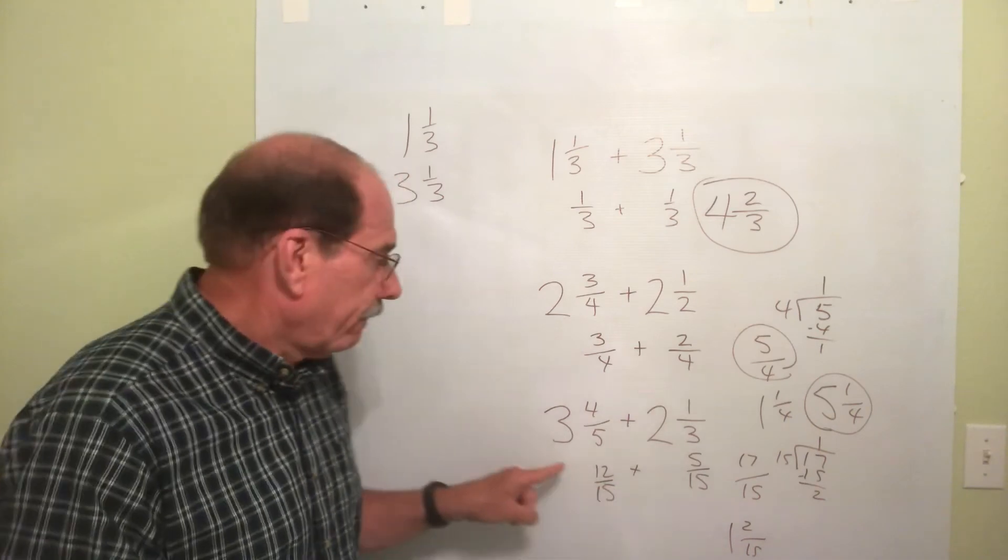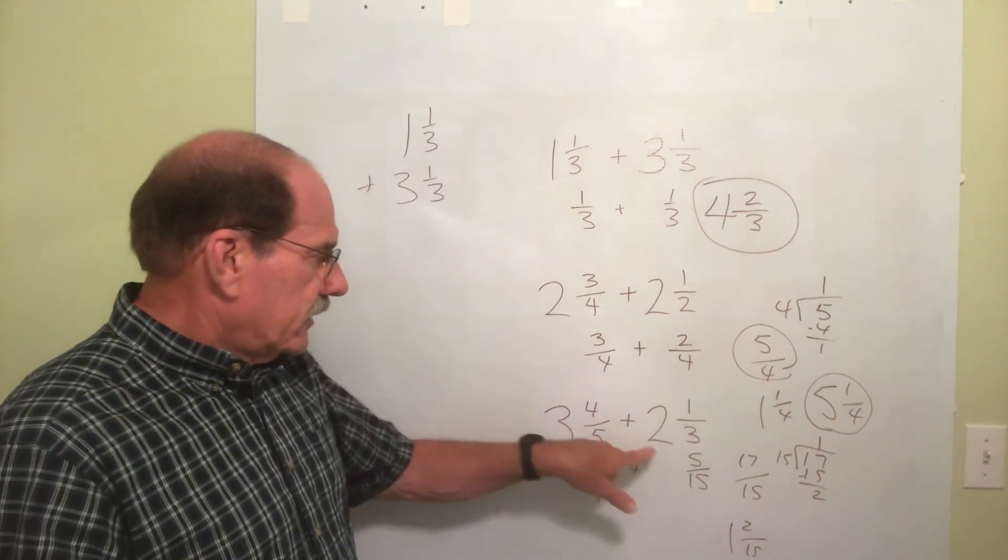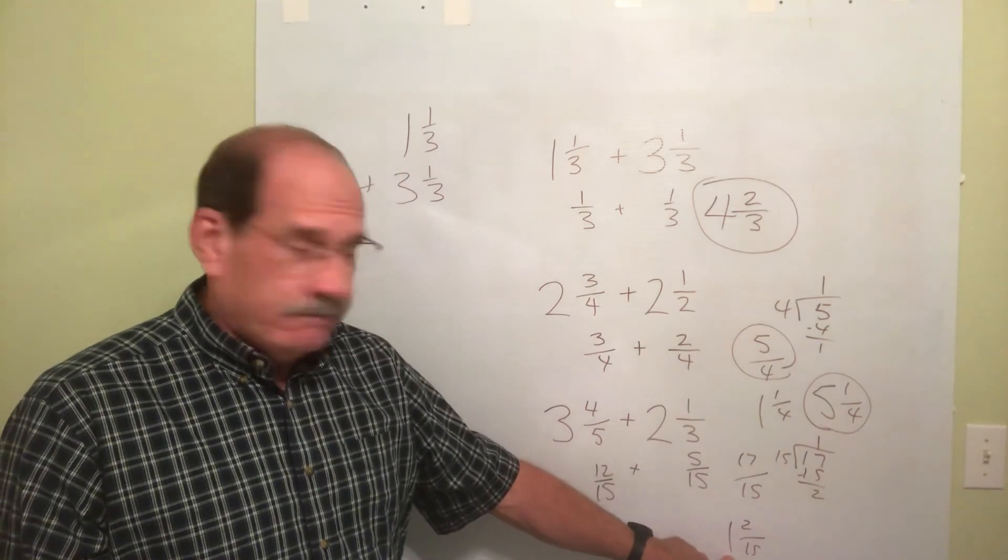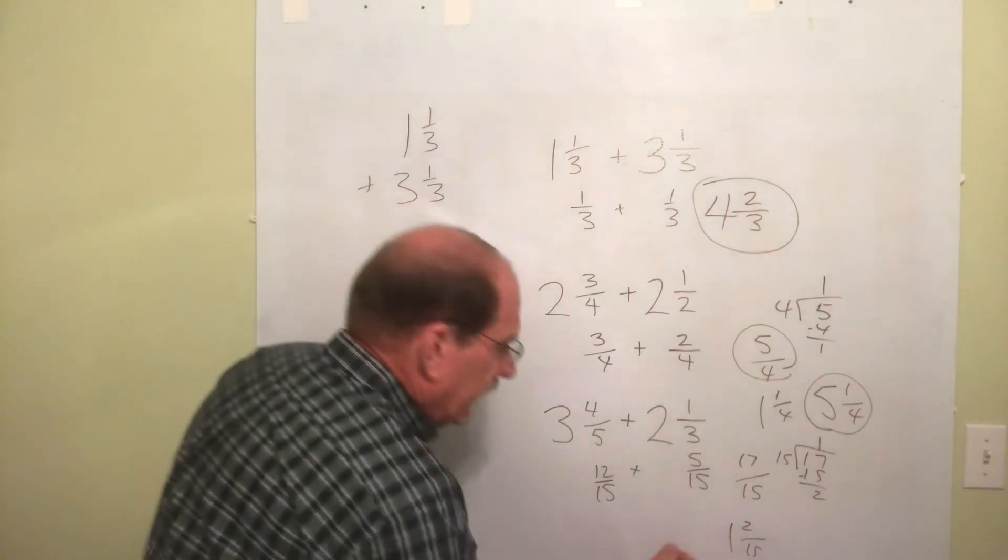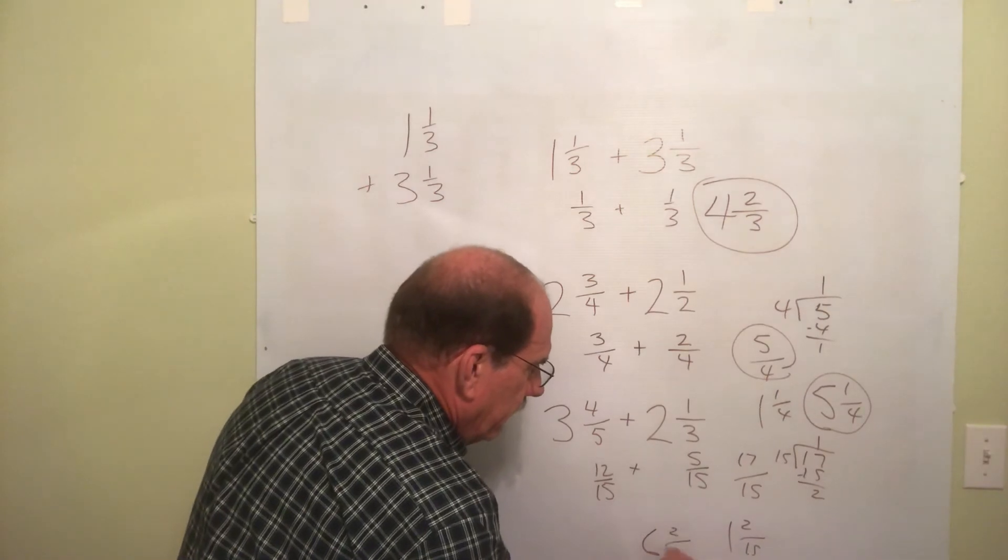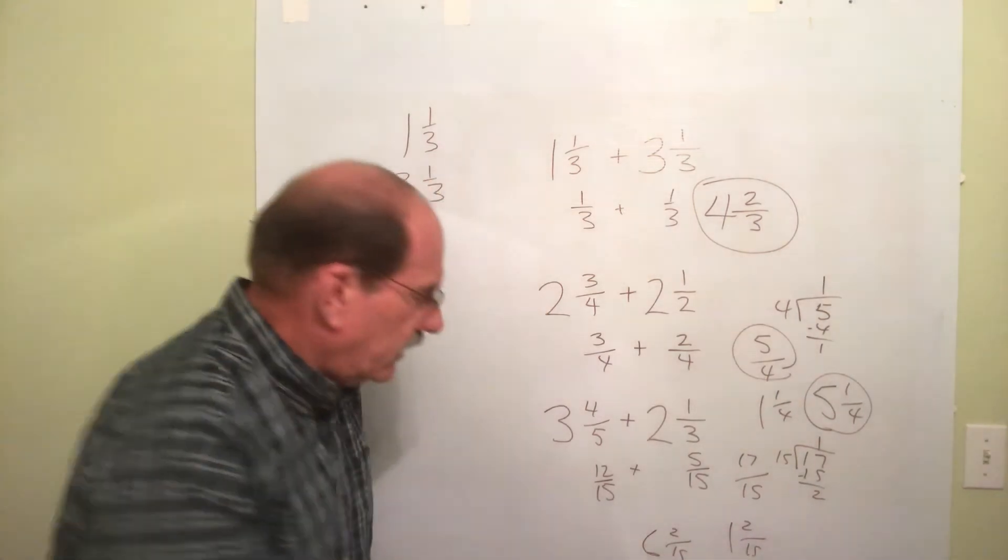Now let's pick up the whole numbers. But again, because that's 3, that's 2, and there's a 1, it's 3 plus 2 plus 1, which is 6. So the final answer is 6 and 2 fifteenths. That's a 6 by the way.